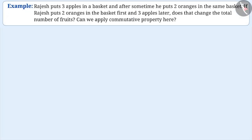Rajesh keeps three apples in a basket and after some time he keeps two oranges in the same basket. If Rajesh keeps two oranges in the basket first and three apples later, does that change the total number of fruits? Can we apply commutative property here?